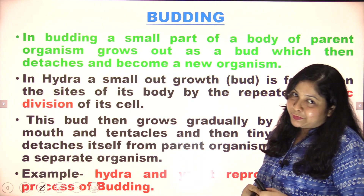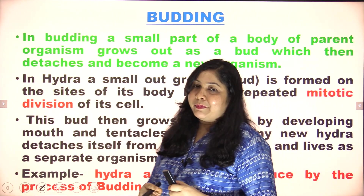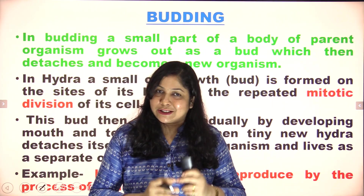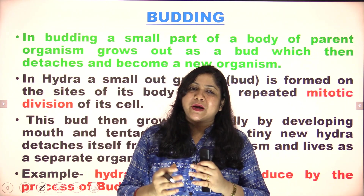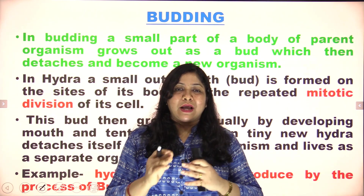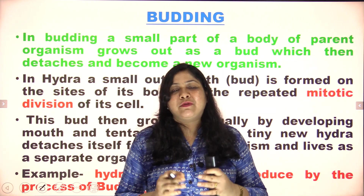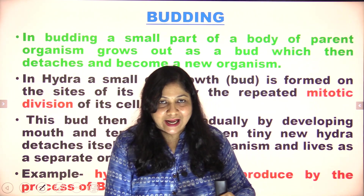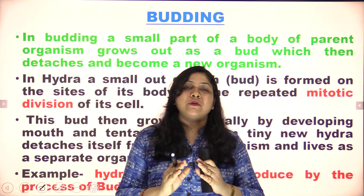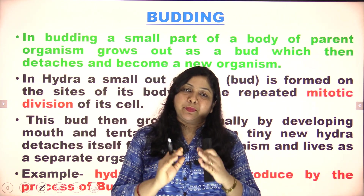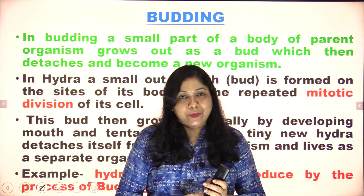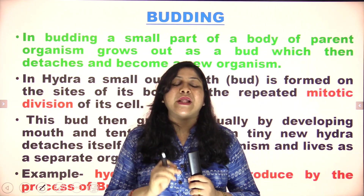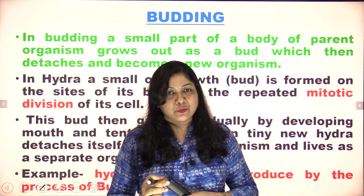Now we come to budding. In budding, a bud-like structure arises in the parent's body. When the bud matures and is able to complete basic life processes on its own, it detaches from the parent body and a new individual forms. This process is called budding because the formation of new offspring occurs through bud formation.